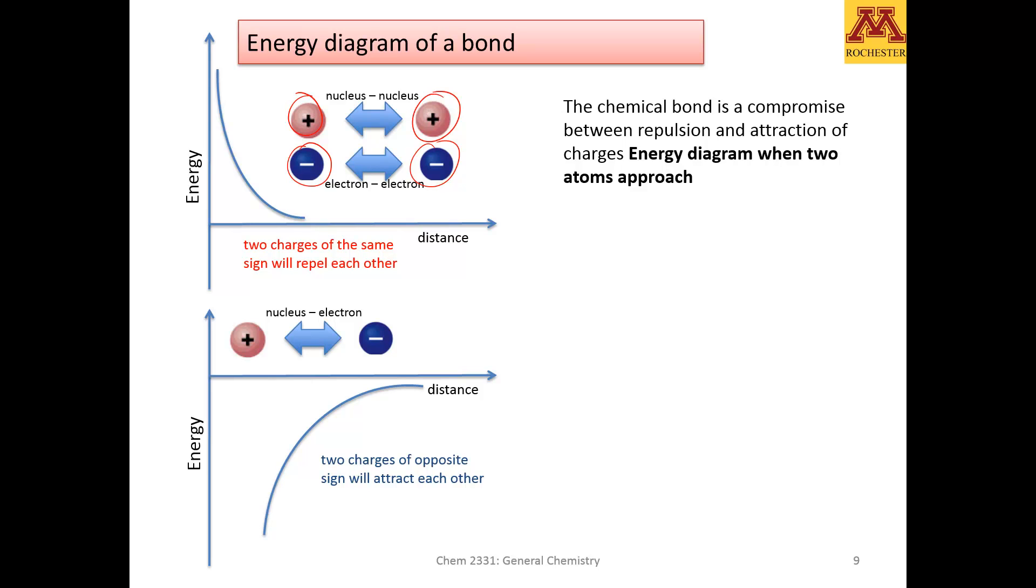So a chemical bond is nothing else but the combination of the repulsion from here and the attraction from here. It's a balance, a trade-off between the repulsion and the attraction of nuclei and electrons.